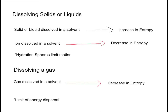The fourth factor, dissolving gas, says that when you dissolve a gas in a solvent, it will decrease its entropy. This is because it limits the energy dispersal. We know that gases have really high entropy, and when you put them in a solvent, that will lower that entropy, because they won't have the freedom of motion they had before.